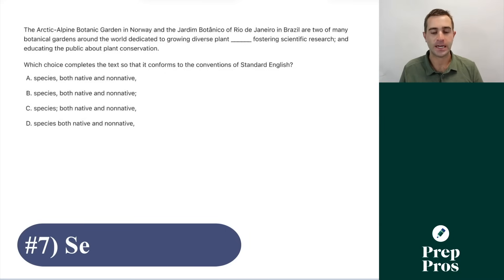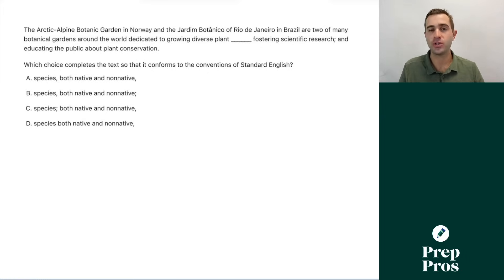One of the next things you're going to see on the SAT are semicolon lists, and this is something that always feels really strange and challenging for students. But if you have a complex list, which is a list where you have commas being used in the list for a reason besides the listing, we need to use semicolons to break up the items on the list. A dead giveaway to these questions is if you ever see a semicolon with an and or an or already in the sentence, that's going to tell you you need to look for semicolons. As we read through this, the Arctic Alpine Botanic Garden in Norway and the Yardium Botanico of Rio de Janeiro in Brazil are two of many botanical gardens around the world dedicated to growing diverse plant species, both native and non-native.